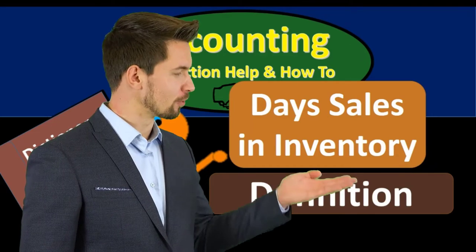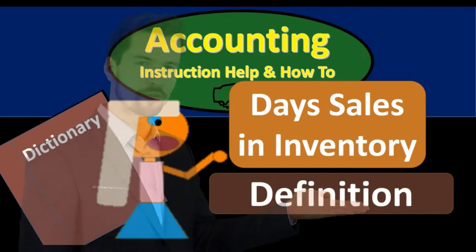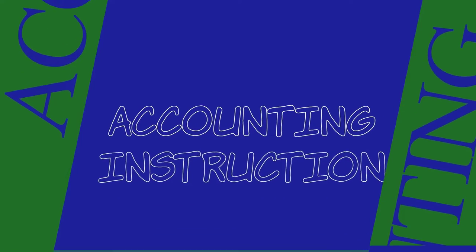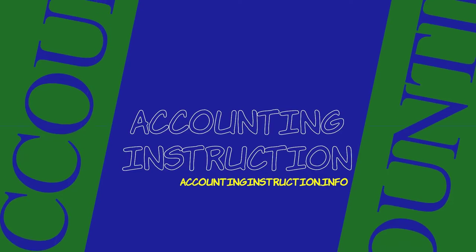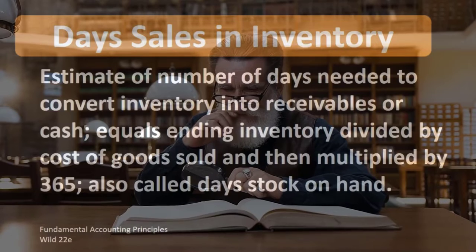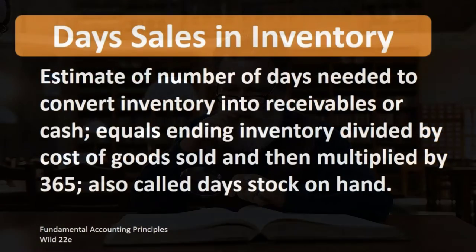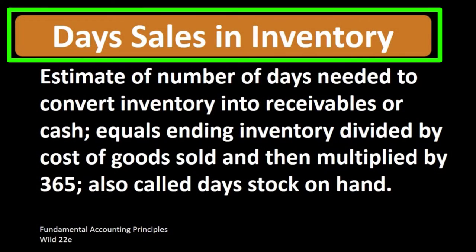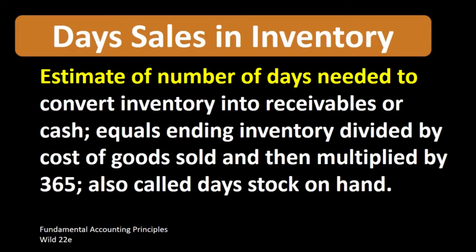Hello, in this lecture we will define day sales in inventory. According to Fundamental Accounting Principles Wild 22nd edition, the definition of day sales in inventory is: estimate of number of days needed to convert inventory into receivables or cash, equals ending inventory divided by cost of goods sold, then multiplied by 365. Also called day's stock on hand.